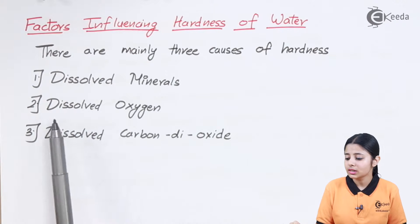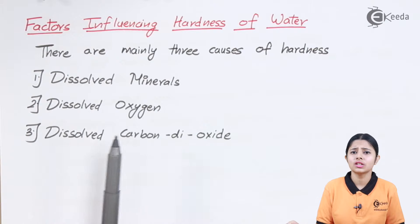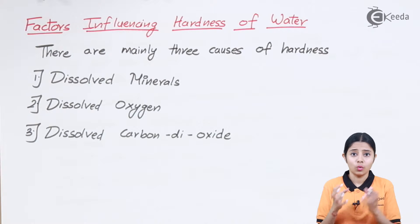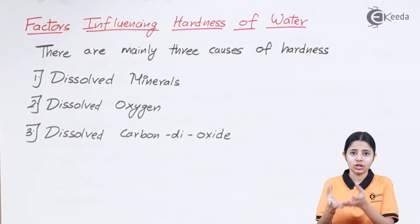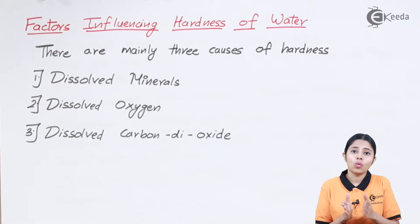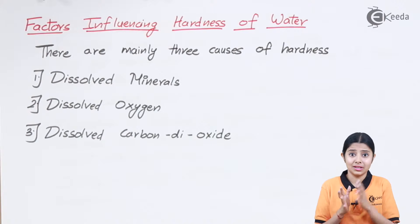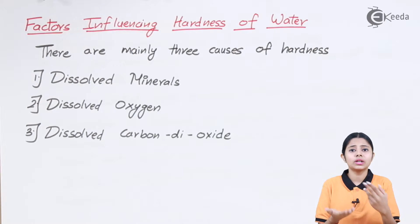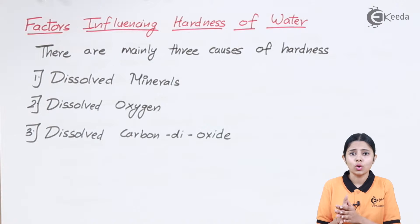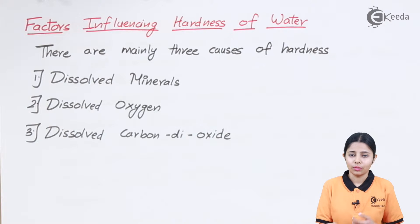The second factor is dissolved oxygen. Dissolved oxygen is a tricky one, because H2O is water and water itself contains oxygen in dissolved form. Dissolved oxygen does not directly make water hard, but it reacts with many minerals and produces oxidation products which make the water hard.